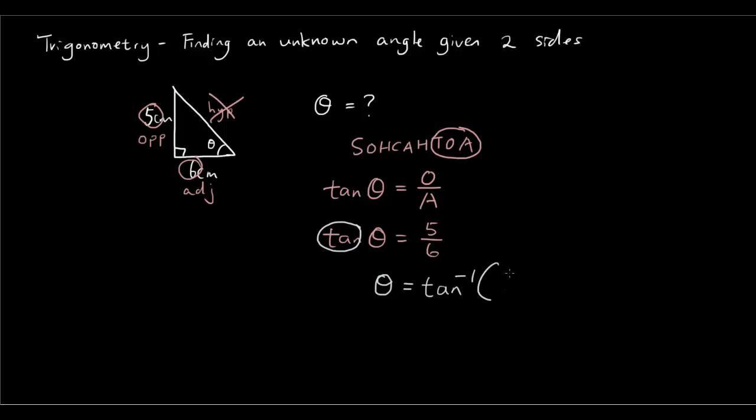So now we know that tangent inverse bracket 5 over 6 is the input for the inverse tangent function. And if we simply type this in the calculator, we get to find out what θ equals.